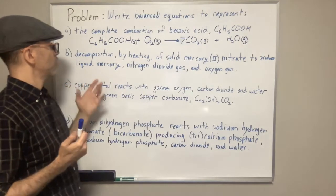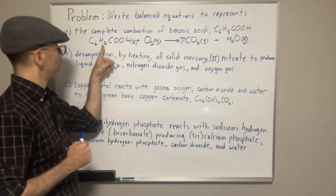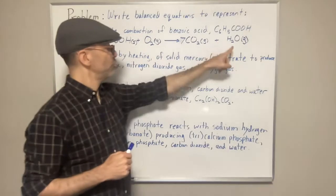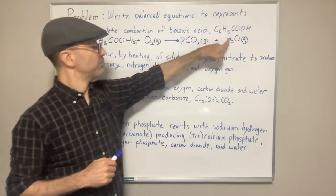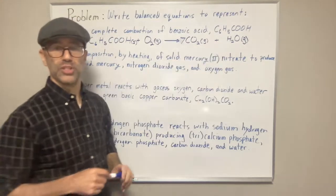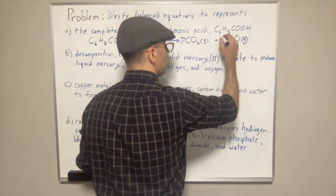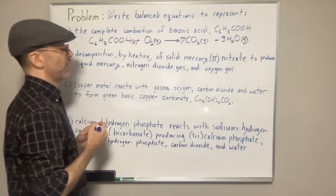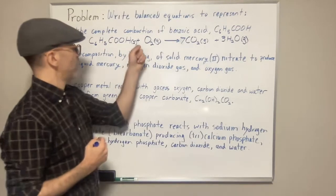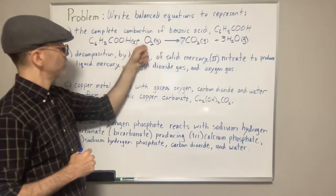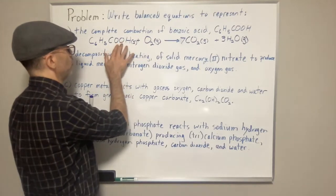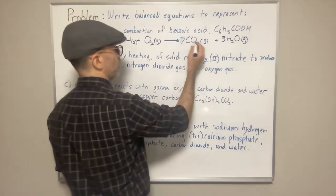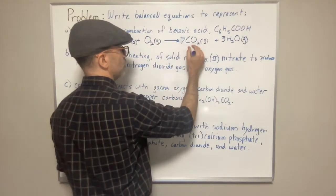Next, we do hydrogen. We have five hydrogens in C6H5 plus one more in COOH, giving six total hydrogens on the reactant side. Water has two hydrogens, so what coefficient times two gives us six? A coefficient of three. Three times two gives us six — that matches. Hydrogens are balanced.